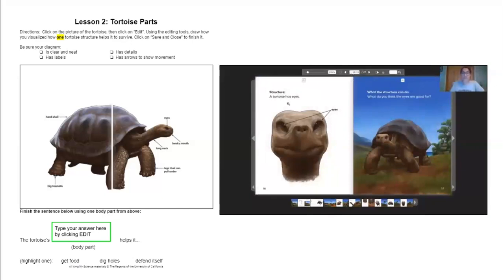Structure: A tortoise has eyes. What the structure can do: Well, what do you think the eyes are good for? I mean, they're also good for seeing, but for seeing what? If we think about the tortoise needing to survive and stay alive, and we think about the game that we played during the last lesson, what do you think the tortoise would have to look out for? It would have to look out for food, definitely. But maybe it'll also have to look out for predators, like the hawk that we saw in the last page. And predators are hunters.